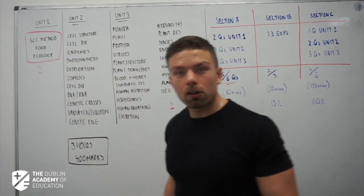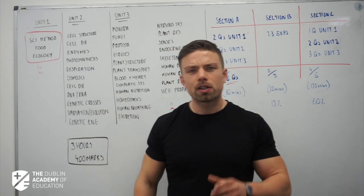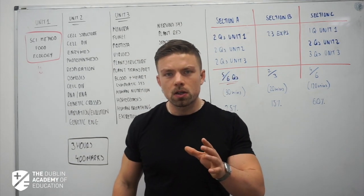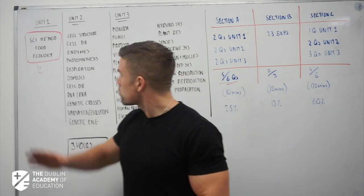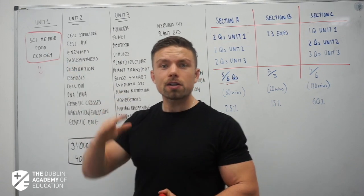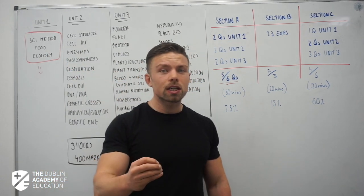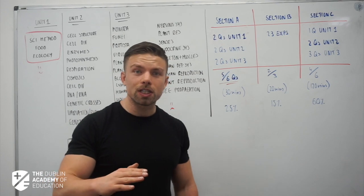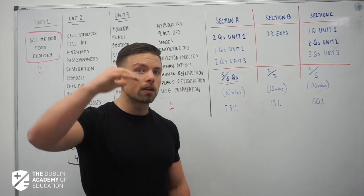Scientific Method will take you around four minutes, and 23 experiments which can be extremely shortened down. So again, if you look at that, if you study Unit 1 and your experiments, you're going into the exam knowing that you can get 40% and everything from that is just a building block.